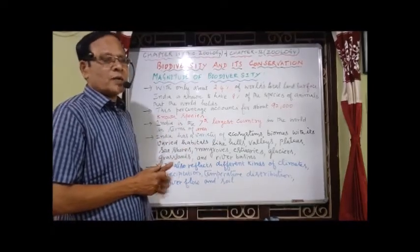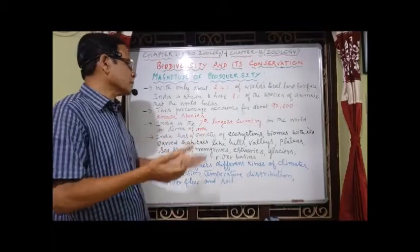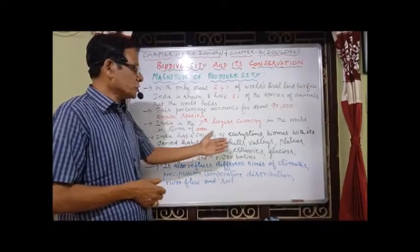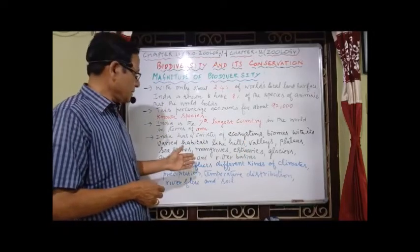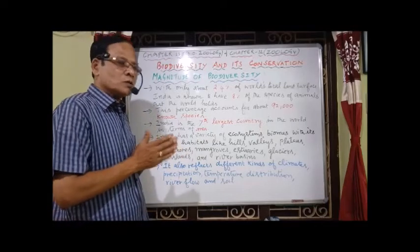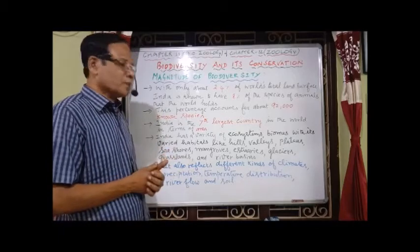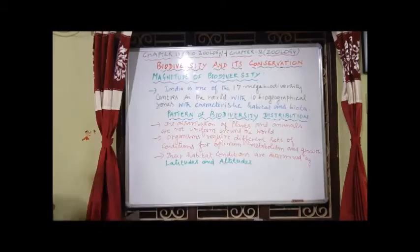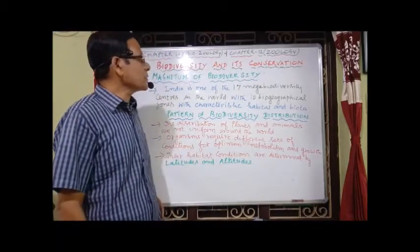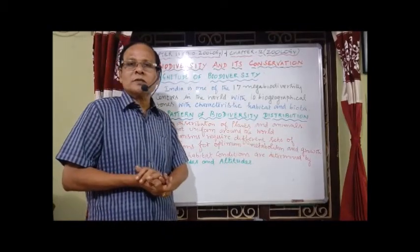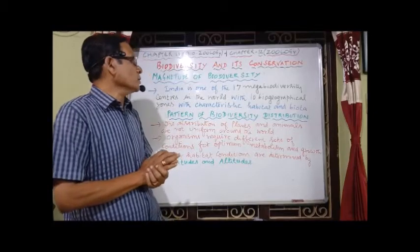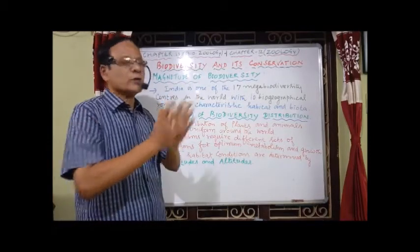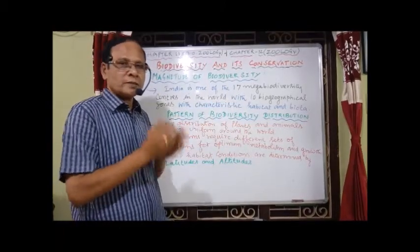India has a variety of ecosystems and biomes with diverse habitats such as hills, valleys, plains, seashores, mangroves, estuaries, glaciers, grasslands, and river basins, reflecting different climates, precipitation, temperature distribution, and soil types. India is one of the 17 mega biodiversity centers in the world, with nearly 10 biogeographical zones, each with characteristic habitats and biota.